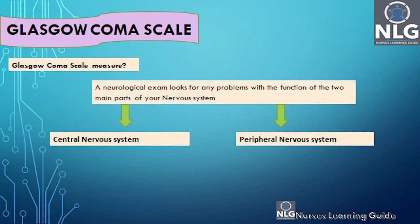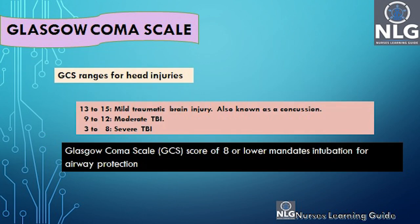The neurological exam looks for any problems with the function of the two main parts of the nervous system: the central nervous system and peripheral nervous system. The GCS score ranges for head injuries as follows: the highest score is 15, and 13 to 15 is considered a mild traumatic brain injury. 10 to 12 is moderate, and 3 to 8 is severe.